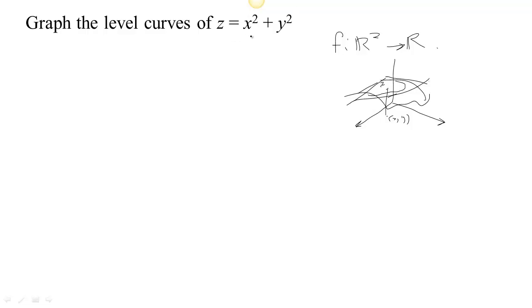So here's this function, z equals x squared plus y squared. You can see the two inputs are x and y, and then the output is z. And we actually know what the surface looks like.